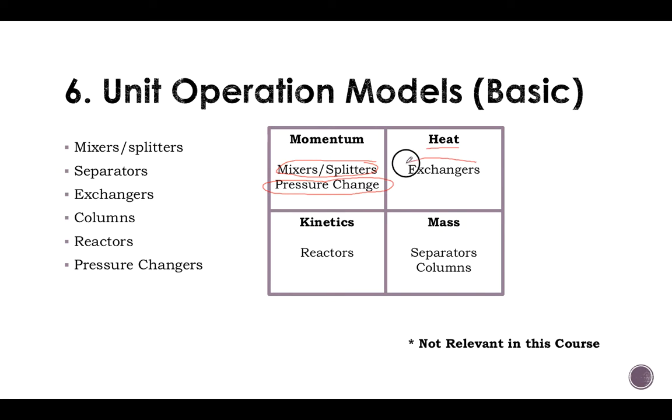Heating is essentially exchangers, temperature heater, cooler, condenser, evaporator, and so on. Kinetics, of course, only reactors—by definition, anything that reacts something is a reactor. And finally, mass operation, which are either separators, which are a little bit simpler, and columns, which are way more complicated.